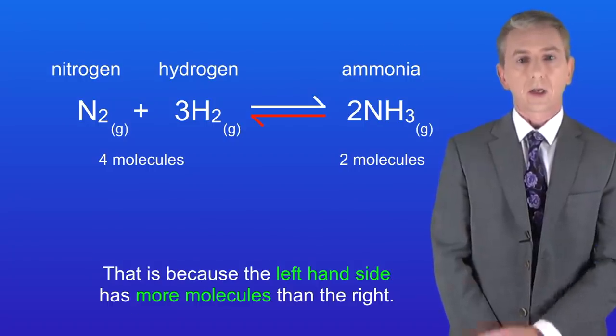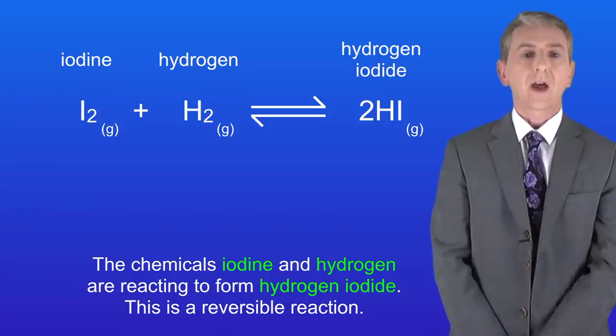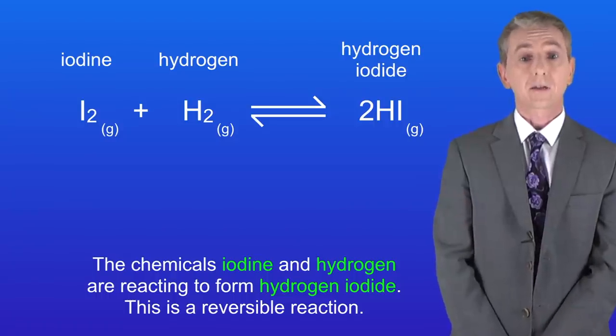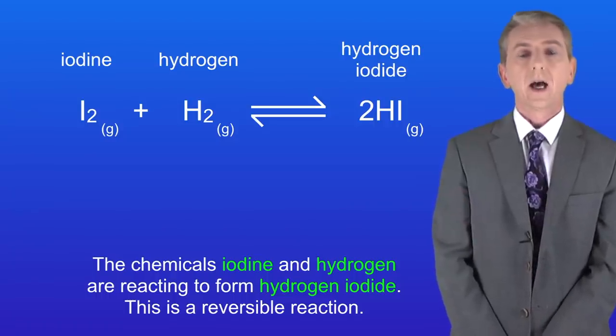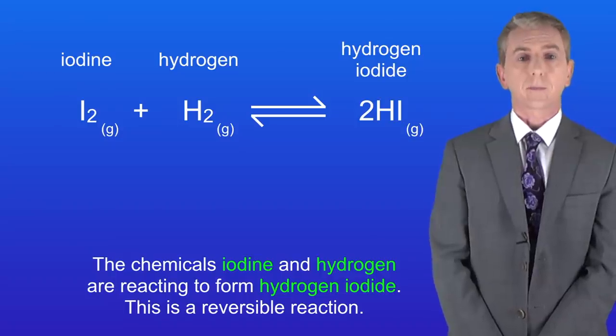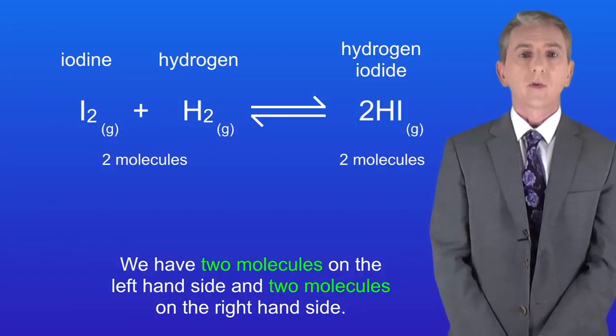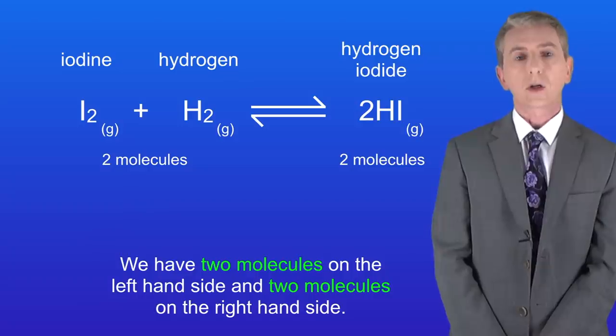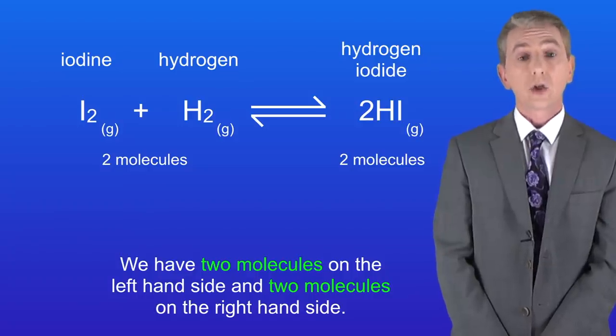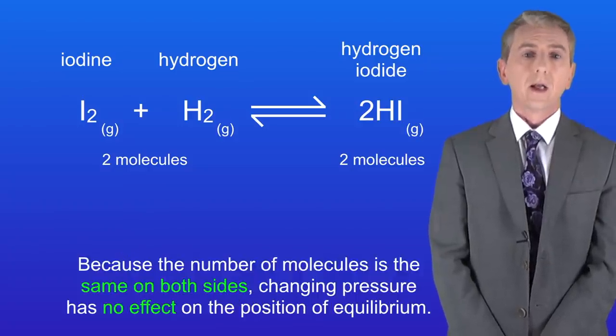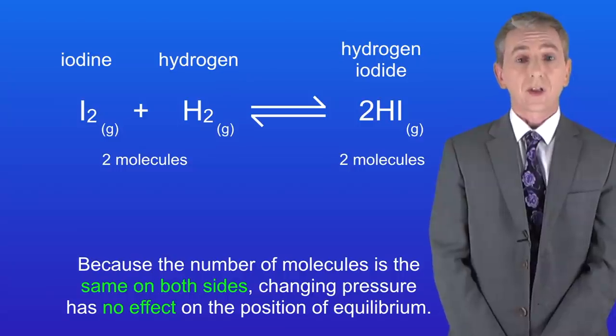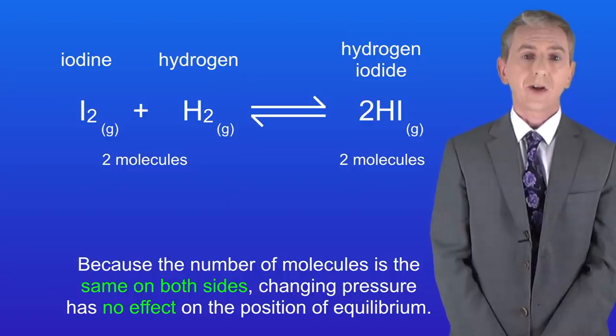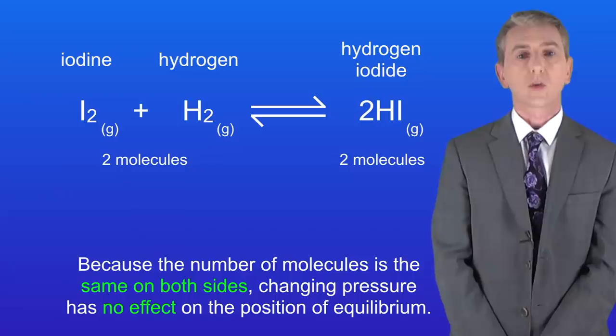I'm showing you another reaction here. In this case the chemicals iodine and hydrogen are reacting to form hydrogen iodide, and again this is a reversible reaction. If we look at the number of molecules we can see that we've got two molecules on the left hand side and two molecules on the right hand side. Now because the number of molecules is the same on both sides, changing pressure has no effect on the position of equilibrium.